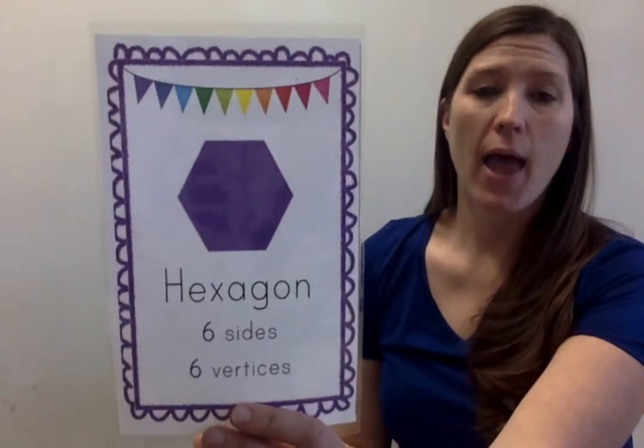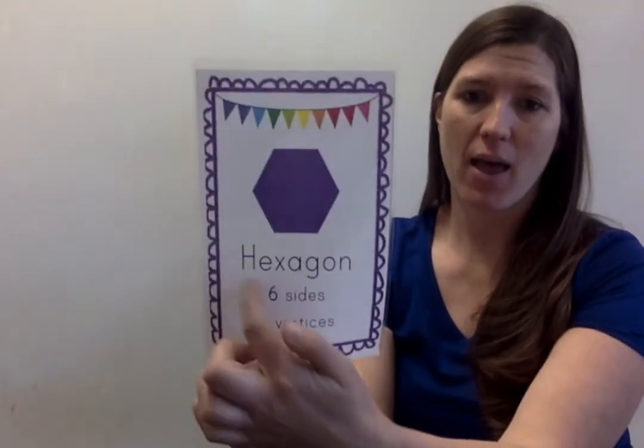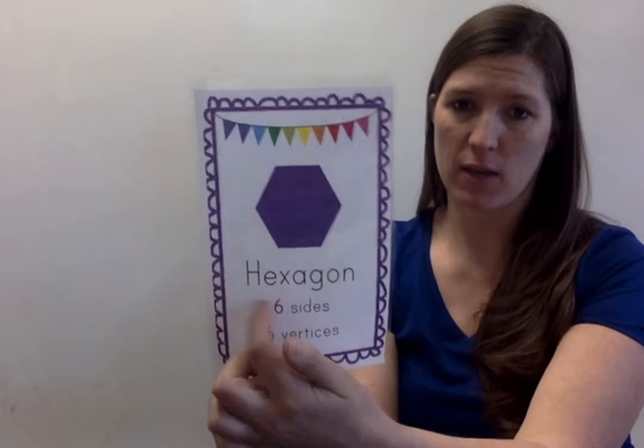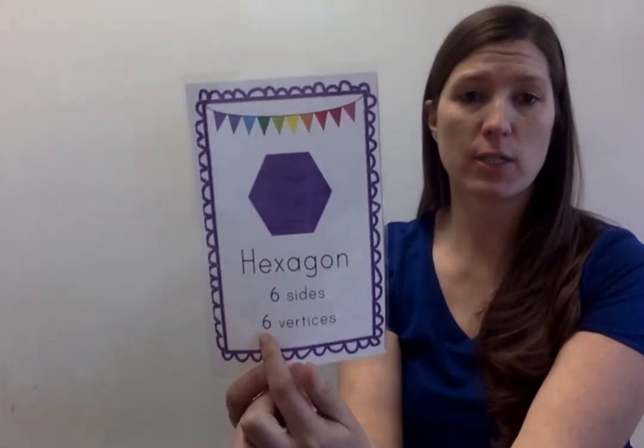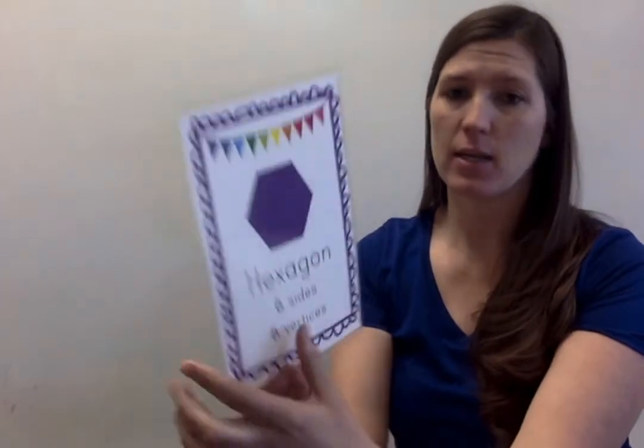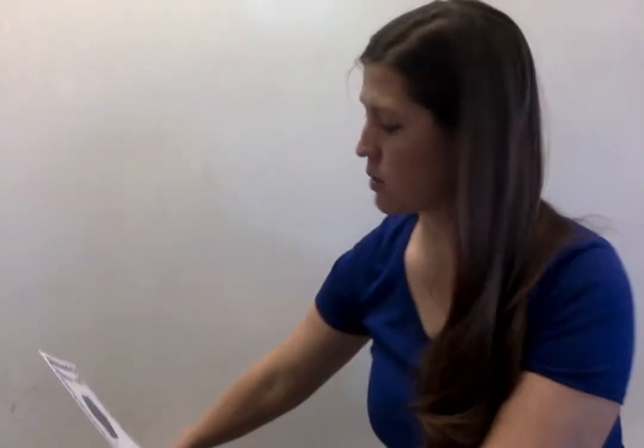What shape is this? Hexagon. Hex means 6. If hex means 6, how many sides does it have? 6. How many vertices does it have? 6. Here is our hexagon.